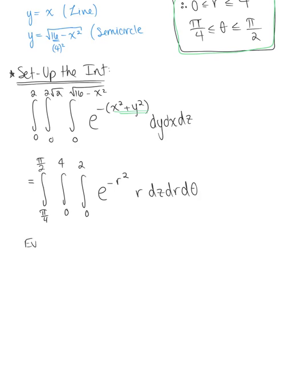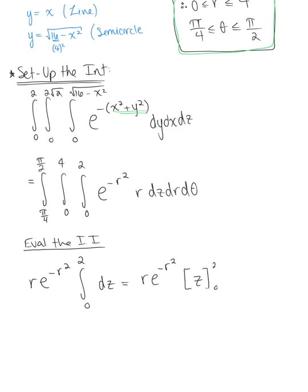Let's evaluate the inner integral with respect to z. We pull r times e to the negative r squared outside the integral, leaving the integral from 0 to 2 of dz. This gives r times e to the negative r squared times z, evaluated from 0 to 2, leaving us with 2r times e to the negative r squared.